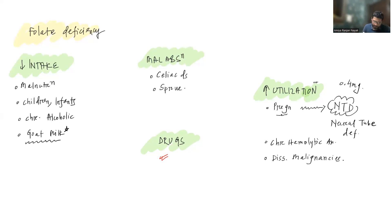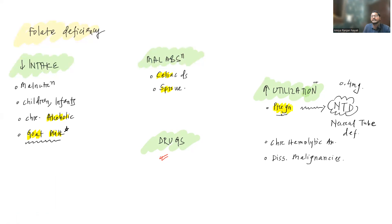To summarize the causes of folic acid deficiency: drugs (phenytoin, OCPs, alcohol, methotrexate, trimethoprim, 5-fluorouracil); malabsorption conditions like celiac disease and tropical sprue; decreased intake in chronic alcoholics, malnourished patients, and children on goat milk; and increased utilization in pregnancy — where deficiency leads to neural tube defects — chronic hemolytic anemia, and disseminated malignancy. Folic acid deficiency is easy to treat with oral folic acid tablets.